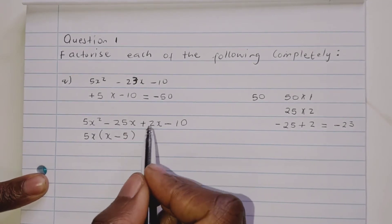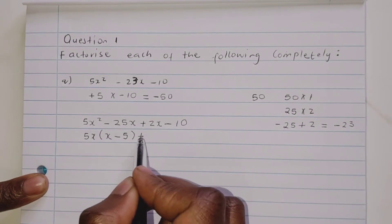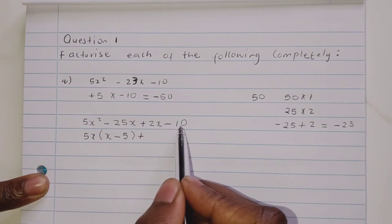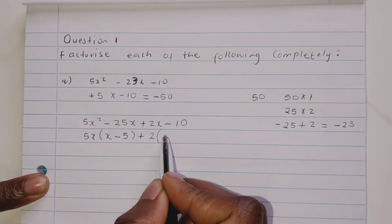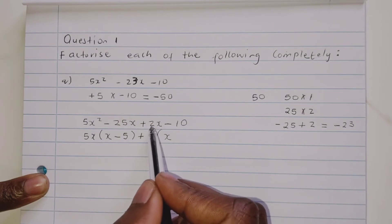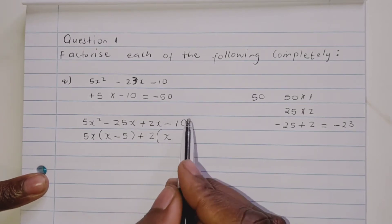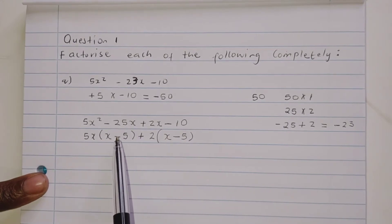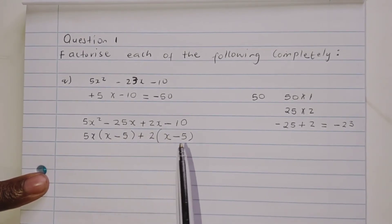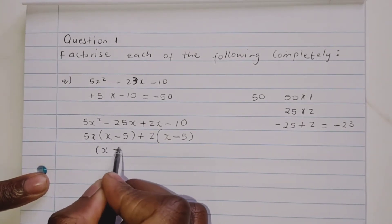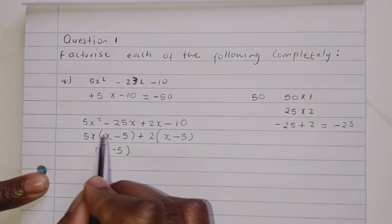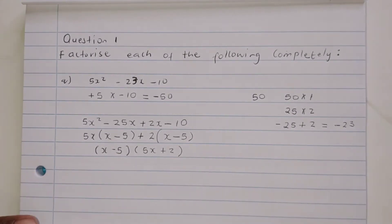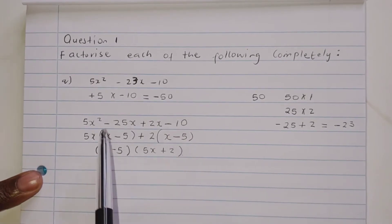Now we check what is common in the second pair, 2x minus 10. The common factor is 2 — 2 goes into 10 five times — so we factor out 2 and are left with x minus 5. We now have two pairs that look the same, so we write down (x minus 5)(5x plus 2). That is our answer — we have factorized number (a).